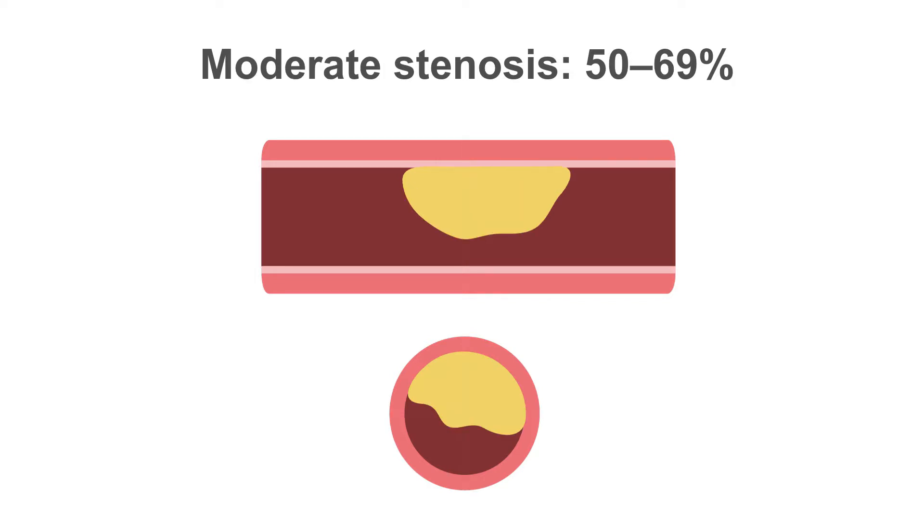A moderate stenosis is where a plaque occupies 50 to 69% of the lumen, or up to three quadrants.